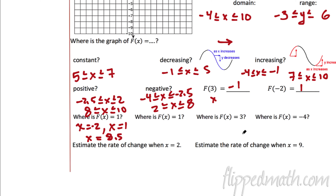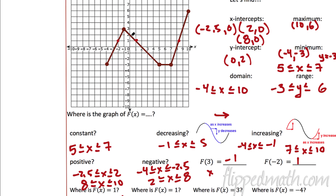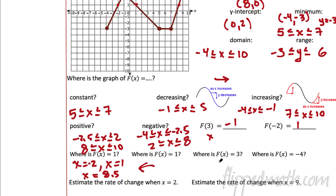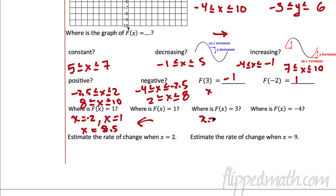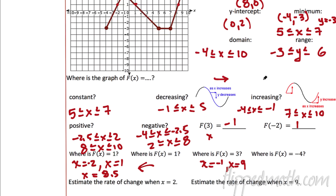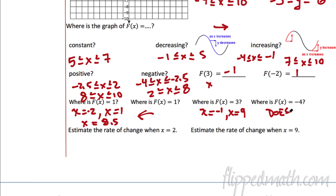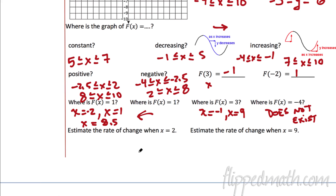Where does f of x equal 3? We've got two places — remember, this is like the y. Where does y equal 3? At x equals negative 1, and at x equals 9. And where does f of x equal negative 4? Well, on this graph it does not exist — there's nowhere it equals negative 4. Negative 4 is down here and no part of the graph is at negative 4.